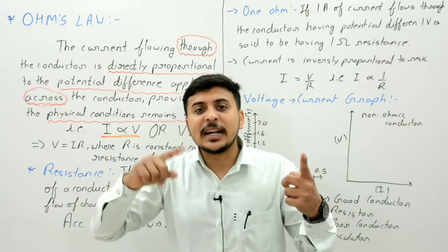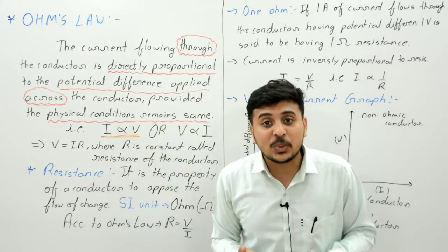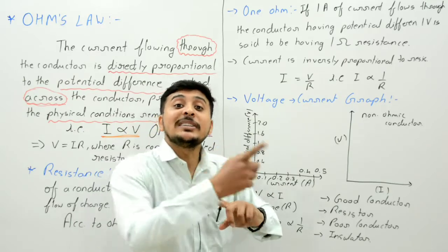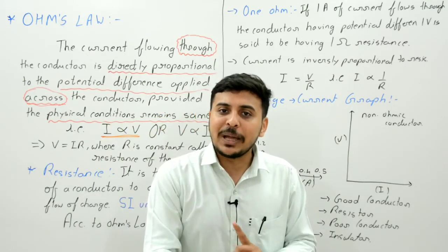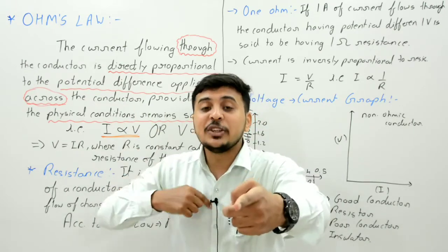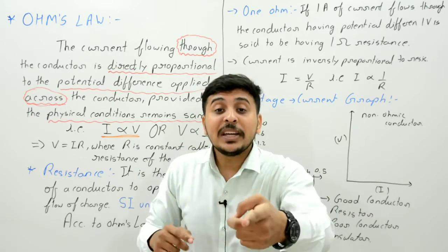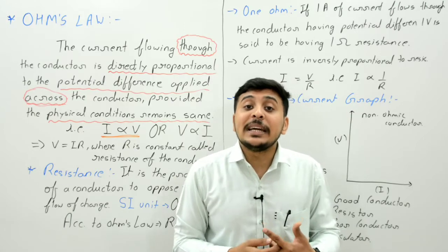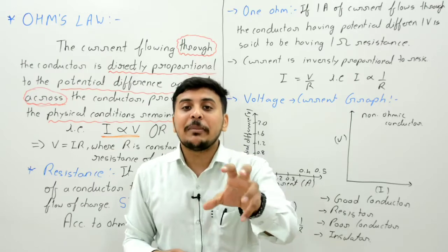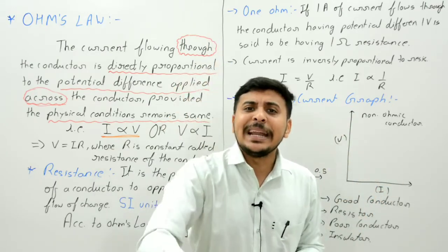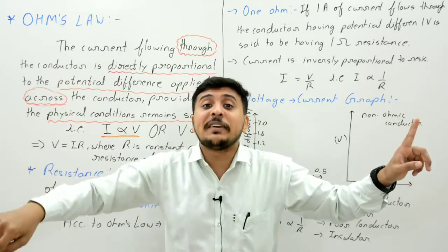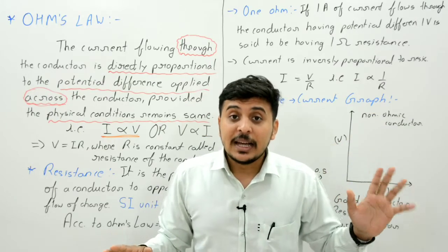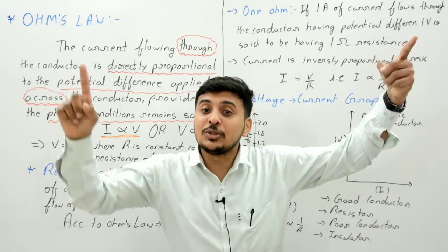Resistance opposes current — the flow of charge is current, so resistance opposes current and does not let it flow. The more resistance there is, the less current there will be — that is a loss for us, because we need current for electrical appliances to work. So current and resistance are inversely proportional: if one increases, the other decreases. Directly proportional means both increase together; inversely proportional means if one increases, the other decreases — like health is inversely proportional to fast food.